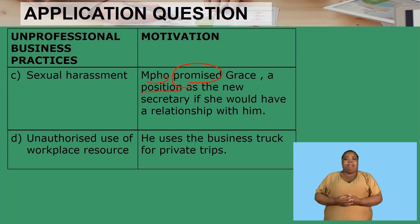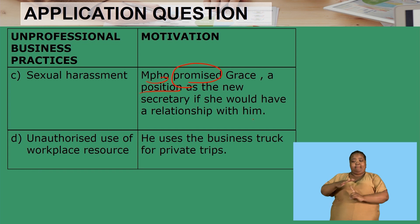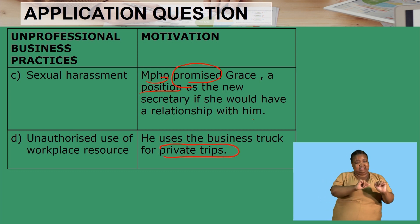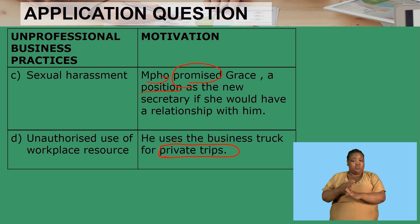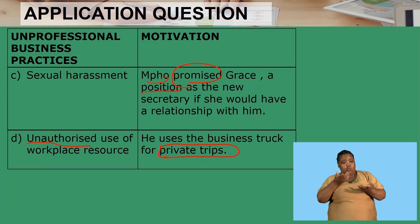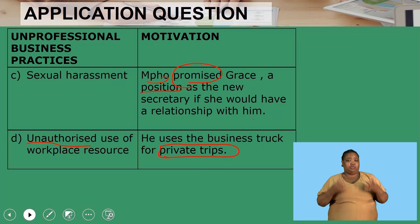The second unprofessional practice is unauthorized use of workplace resources. He uses the business truck for private trips — it is for personal use, not work-related. Therefore it is unauthorized. You are costing the business money. If you are using the business truck for private trips, it impacts the money available to pay your salary.